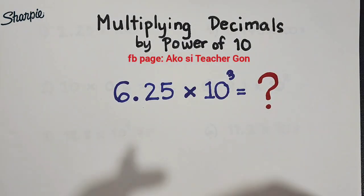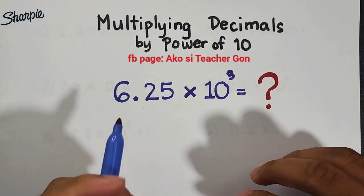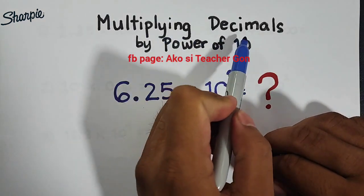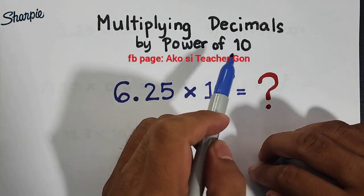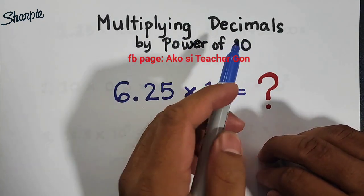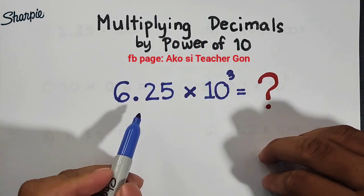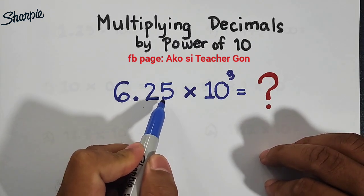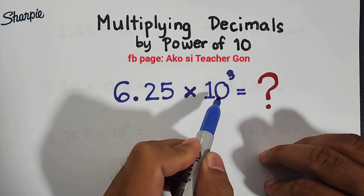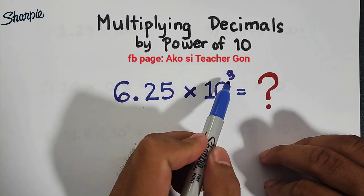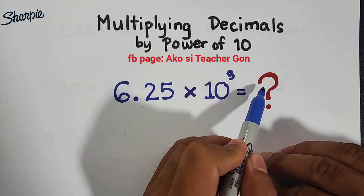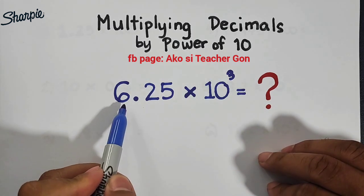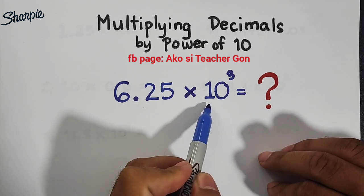Hi guys, it's me, teacher Goen. In today's video, we will talk about multiplying decimals by the power of 10. So we have here a question: 6.25 times 10 raised to the third power. What is the value when you multiply this decimal by the power of 10?